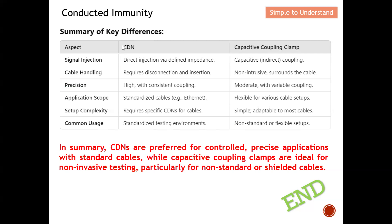Summary of key differences between CDN and capacitive coupling clamp: CDN uses direct injection, allowing defined impedance for higher accuracy. Capacitive coupling uses E-field coupling. For cable handling, CDN requires breaking the joint and inserting the device between the noise source and EUT. Capacitive coupling is non-intrusive — you don't need to break the joint, just couple the energy around the cable. In terms of precision, CDN is very high because it is direct contact, ensuring consistent injection into the power line.